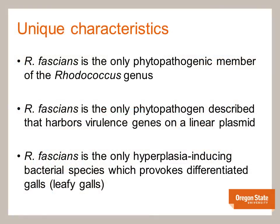Rhodococcus fascians is quite unique in several respects. It is the only member of this genus that can cause disease on plants, and it's also the only phytopathogen we're aware of that harbors its virulence genes on a linear plasmid. In contrast to other gall-forming bacteria such as Agrobacterium tumefaciens, which mostly causes undifferentiated galls, Rhodococcus fascians provokes differentiated galls, also called leafy galls.